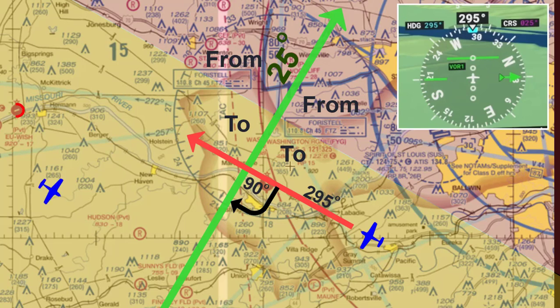I have also taken off from the Herman Airport and once again have positioned the plane to be on the TO side of the VOR as it relates to the 25-degree radial. I'm going to fly east, but again at a 90-degree angle to the radial. This means heading east at 115 degrees. Calm winds to keep things simple.